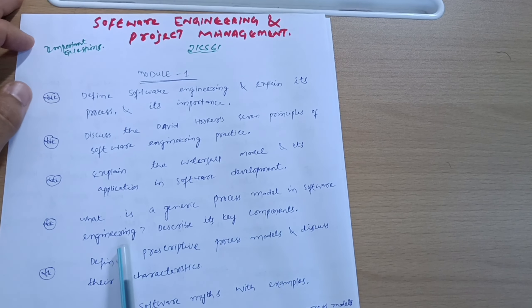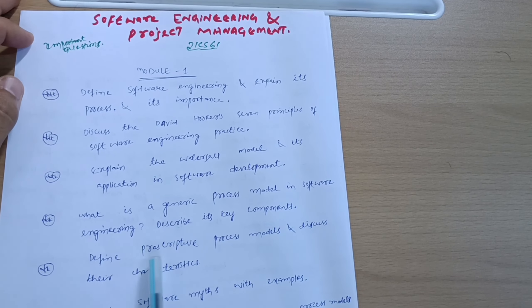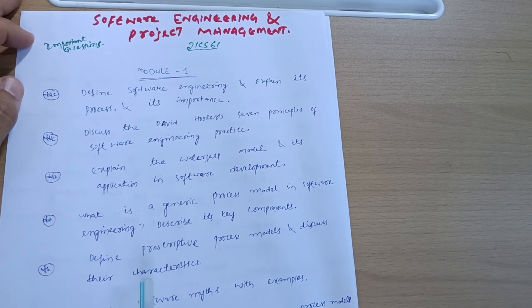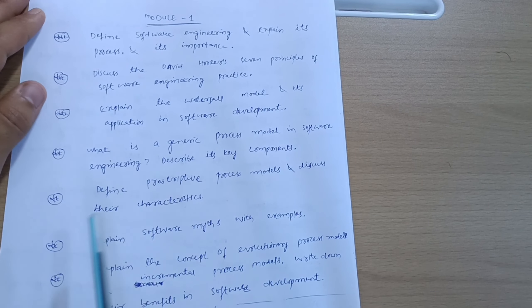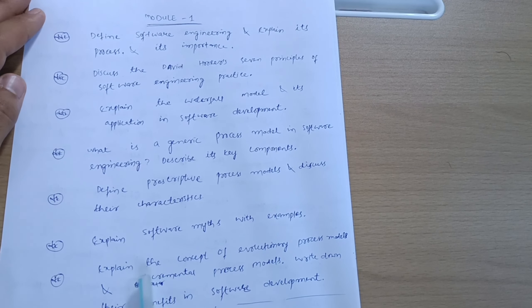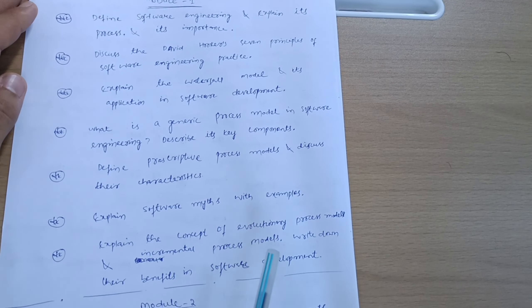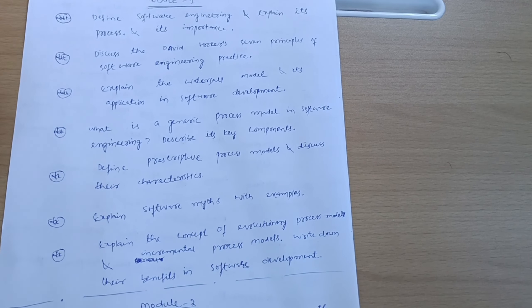Describe its key components and define prescriptive process models and discuss their characteristics. Next, explain software myths with examples. Explain the concept of evolutionary process models and incremental process models, and write down their benefits in software development. It's not possible to remember everything from the textbooks, so better to understand the concepts in your own words.